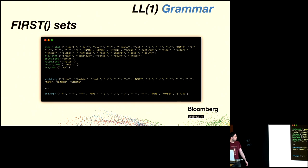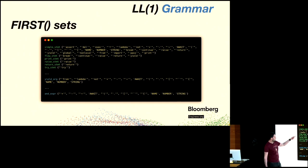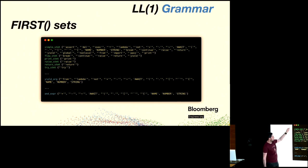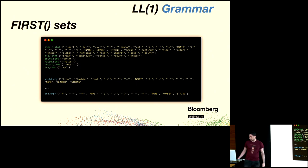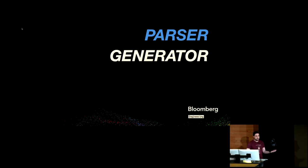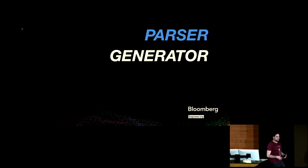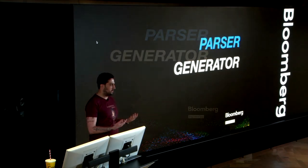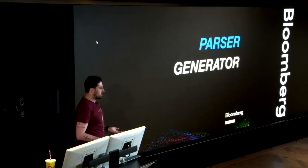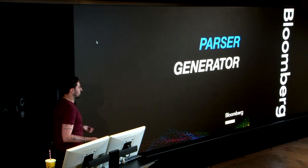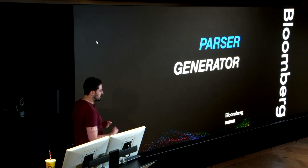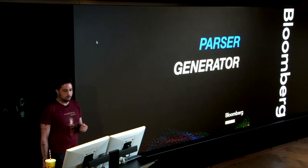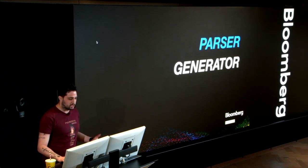Here are the first sets for some expressions. For example, 'print' can only start with 'print', 'raise' can only start with 'raise', but 'simple_statement' can start with all of these things. CPython doesn't have a handwritten parser — it has a parser generator, a tool that generates the parser from the grammar file, making it much less error-prone since you don't need to manually modify the parser every time you add grammar rules.